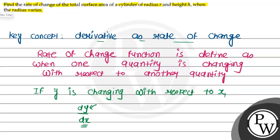Here also we need to find the rate of change of total surface area of the cylinder. So for that, first write the equation for total surface area of cylinder.